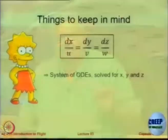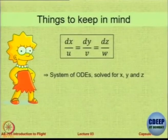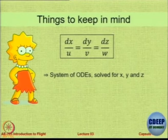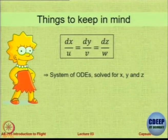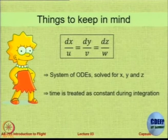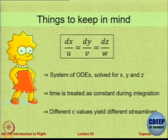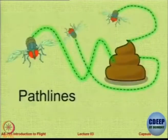Let us keep a few things in mind. This is the prime equation which we have to consider. It is a system of ordinary differential equations which we can solve for x, y, and z. How do you solve an ODE like this? There are many ways — you could do it numerically or analytically. In the tutorial we will take up some examples and solve by substitution or other methods. During this integration you can treat time as constant, and different values of the constant will yield different values.